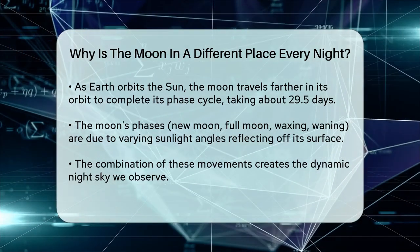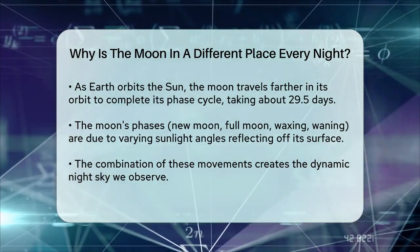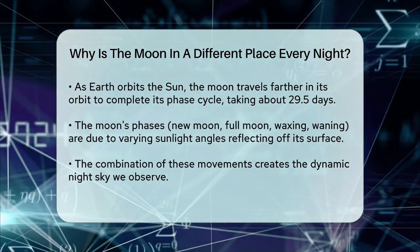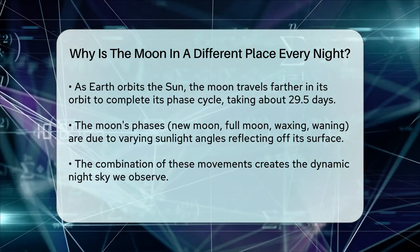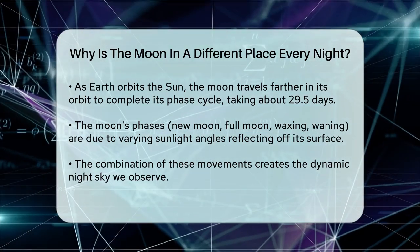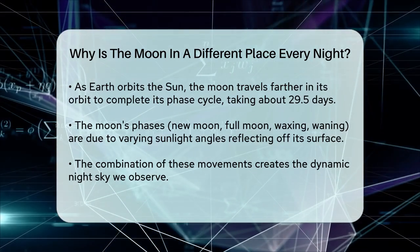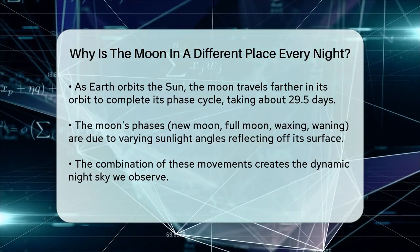So, the next time you see the Moon in a different place in the sky, remember it's because of its orbit around the Earth, the Earth's tilt and rotation, and the Moon's own movement relative to the Sun. These celestial movements create the dynamic and ever-changing night sky we enjoy.